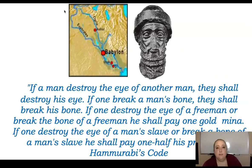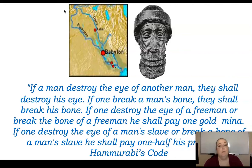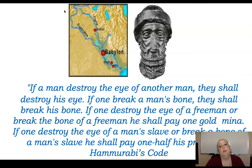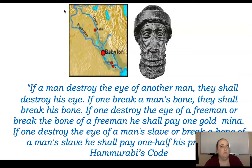Here's an example from the Hammurabi law code: 'If a man destroy the eye of another man, they shall destroy his eye. If one break a man's bone, they shall break his bone. If one destroy the eye of a free man, he shall pay one gold mina. If one destroy the eye of a man's slave or break a bone of a man's slave, he shall pay one half his price.' As you can tell, the life of a slave didn't mean as much — still meant something, just not as much.